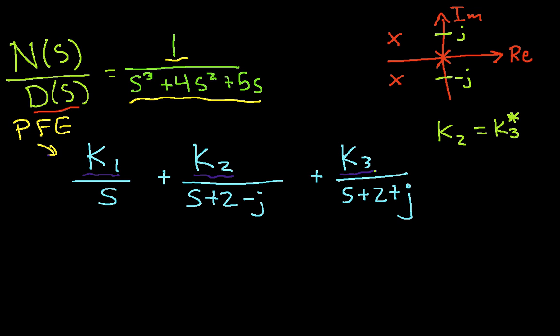But after you do the computations, you get the following result. To make this make sense, we first need to define the real part of this term as alpha, and the magnitude of the imaginary part as omega. So, in this case, alpha is equal to 2, and omega is equal to 1, because the imaginary part has a magnitude of 1.